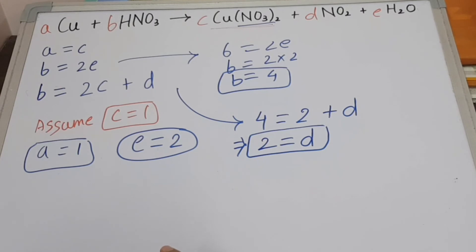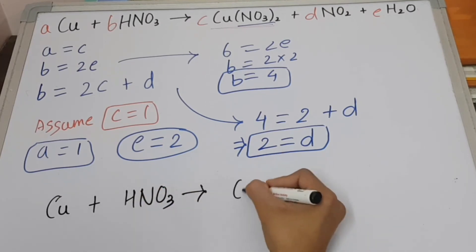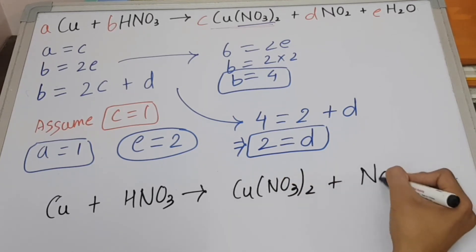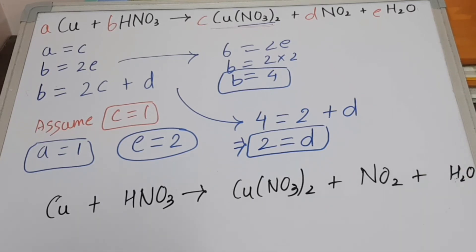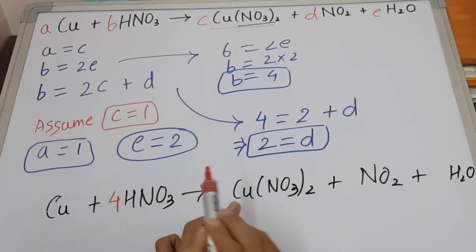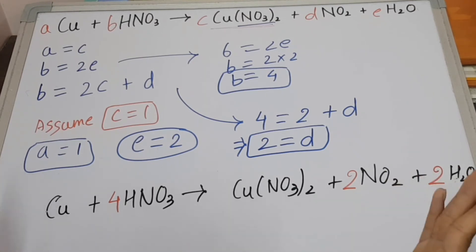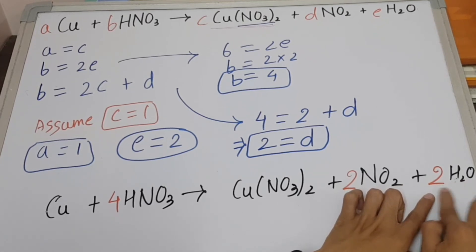Now we are done, but one more step is left — we just have to put the values of A, B, C, and D into the equation: Cu + HNO3 gives Cu(NO3)2 + NO2 + H2O. Putting the values in: A equals 1, B equals 4, C equals 1, D equals 2, E equals 2. Now we can check: 1 copper on the left, 1 copper on the right — great. 4 hydrogen on the left, and 2 times 2 equals 4 hydrogen on the right.